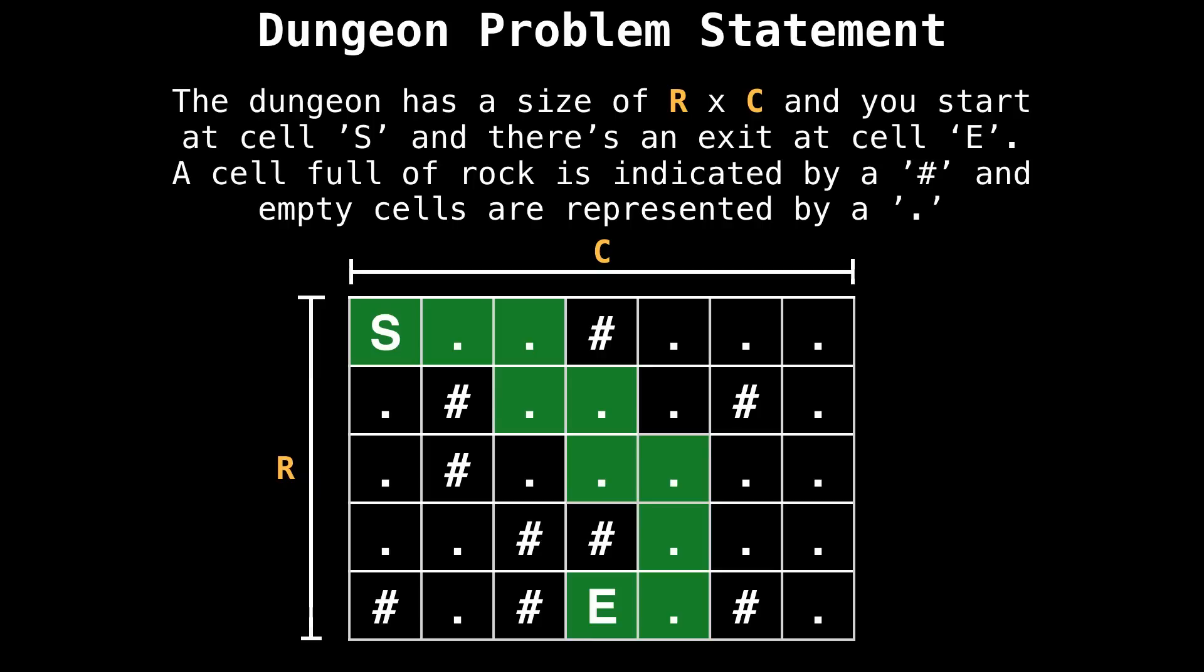Remember that we want the shortest path to escape the dungeon, not just any path. Our approach is going to be to do a breadth-first search from the start node until we reach the end node and count the number of cells we traverse during that process. However, it might not be possible to exit the dungeon if we cannot reach the exit, so we'll have to be mindful of that.